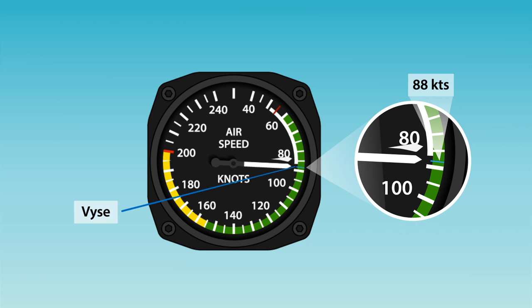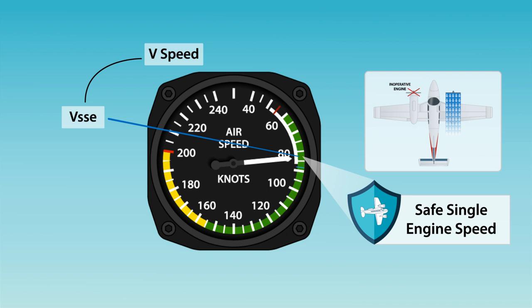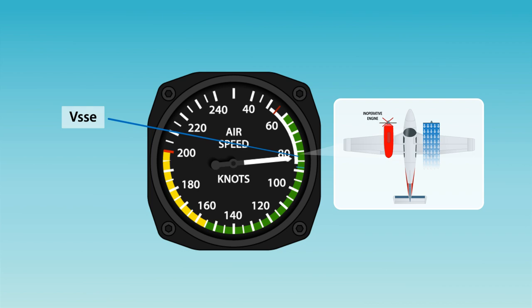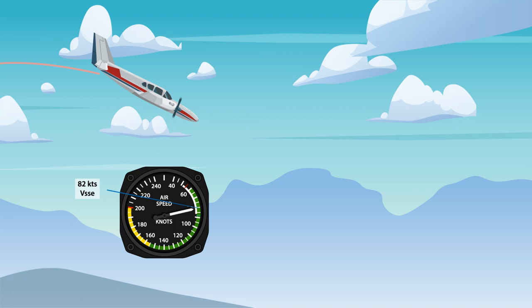Another V-speed with the SE notation is VSSE, which is the safe single-engine speed. It is the minimum speed at which intentional engine failures are to be performed. The pilot should not intentionally fail the critical engine in flight below VSSE to prevent loss of control.